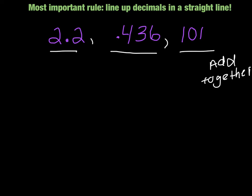So let's go ahead and actually solve this problem. I'm going to add 2 and 2 tenths, 436 thousandths, and 101 together.